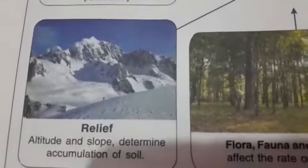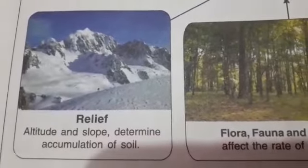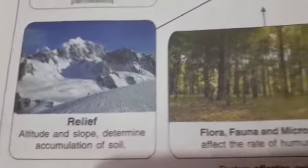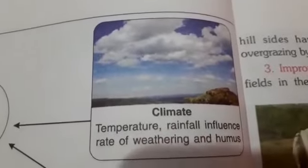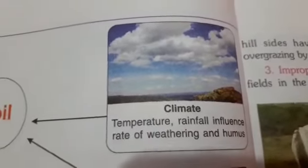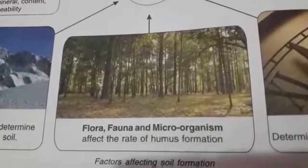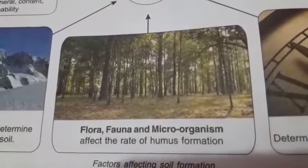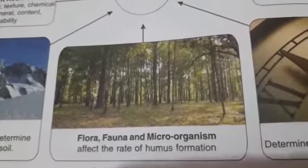Relief refers to different land features — that is altitude and slope — which determine accumulation of soil. Number three, climate: temperature and rainfall, which influence the rate of weathering and humus. Then natural vegetation: flora, fauna, and microorganisms, which affect the rate of humus formation.